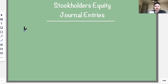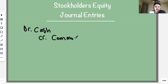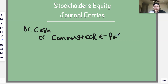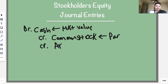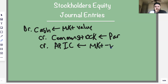Let's say you issue some shares of common stock. You would debit cash for what you received, because when you issue stock you get cash in return as a company. Then you credit common stock for the par value amount. If there's any excess — the market value above par — you credit APIC, which is market value minus par value. That's how you record issuing common stock.